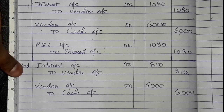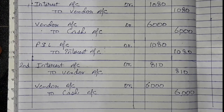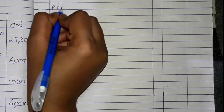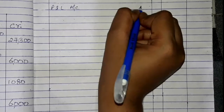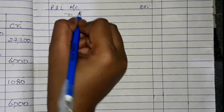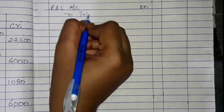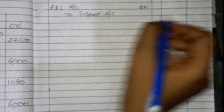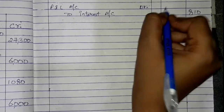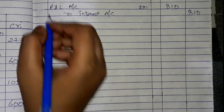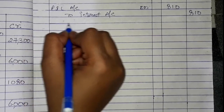Then we transfer interest to profit and loss: Profit and Loss Account debited to Interest Account for 810. This completes our second year of entry. Now we will give the third year of entry.